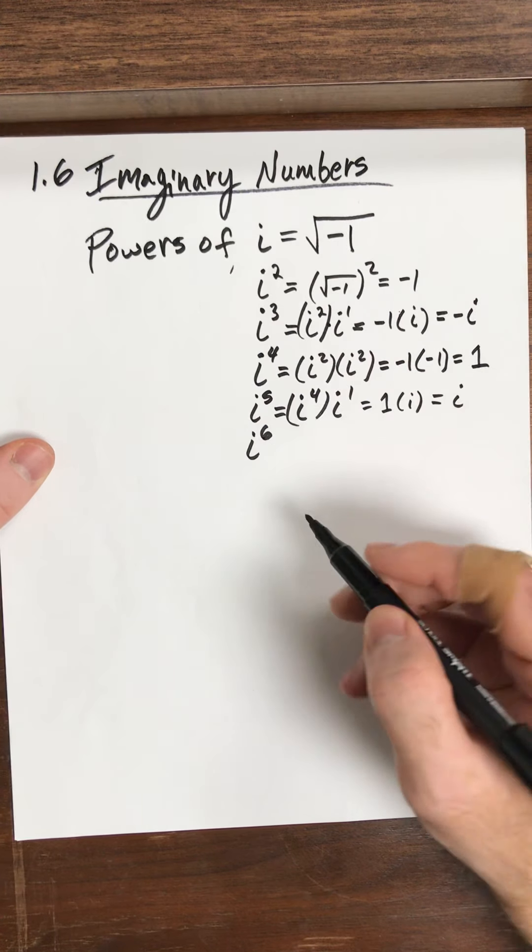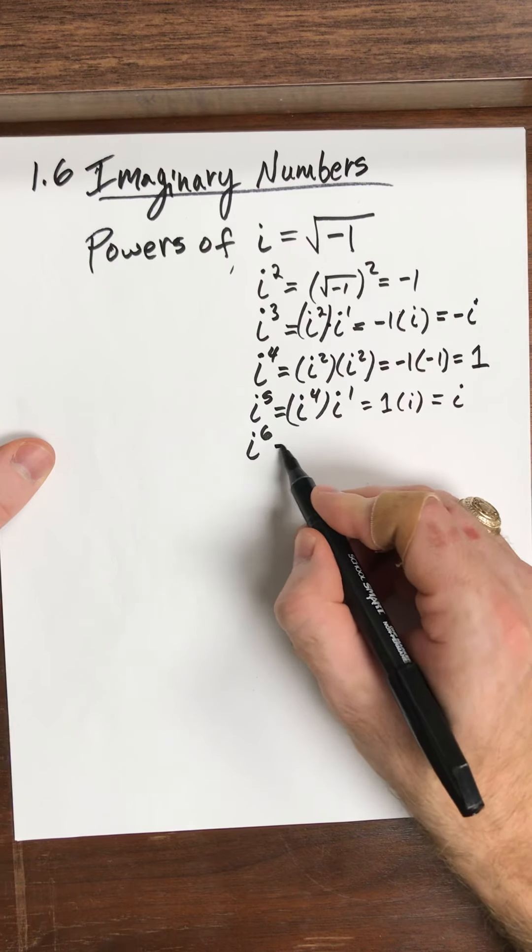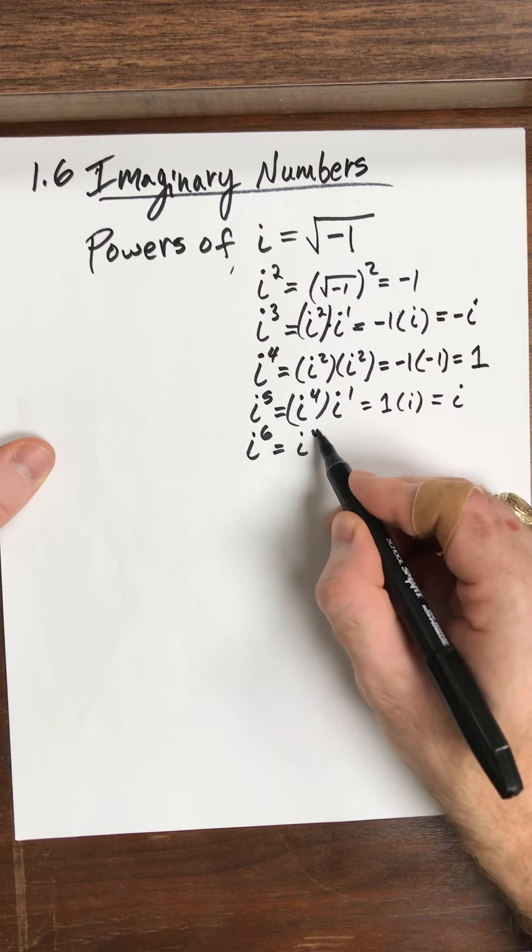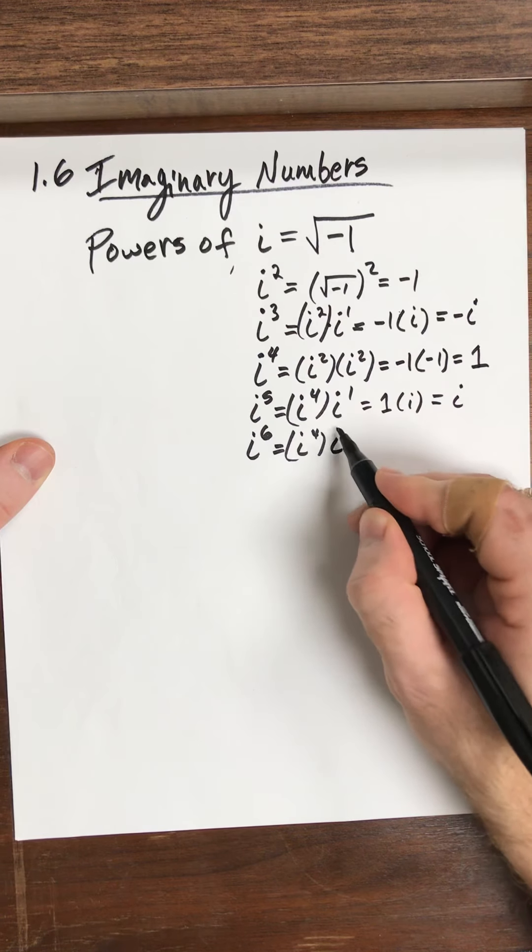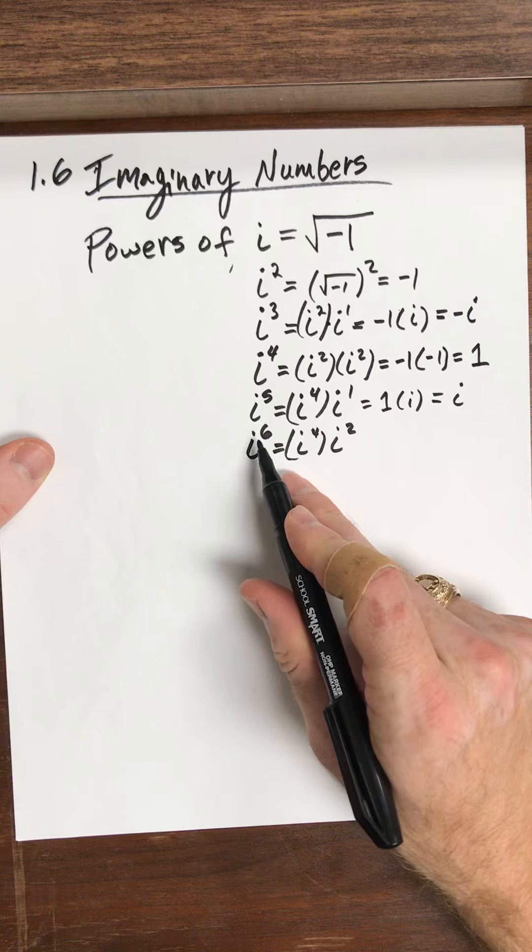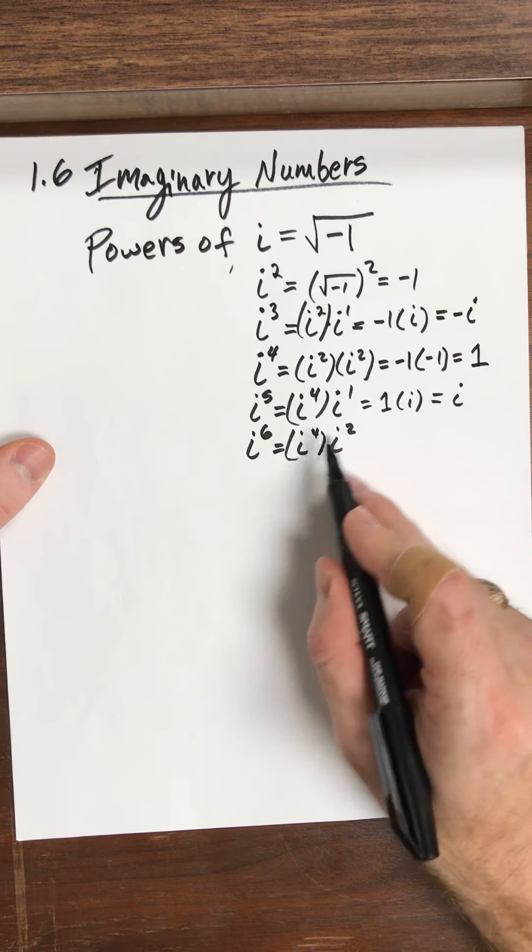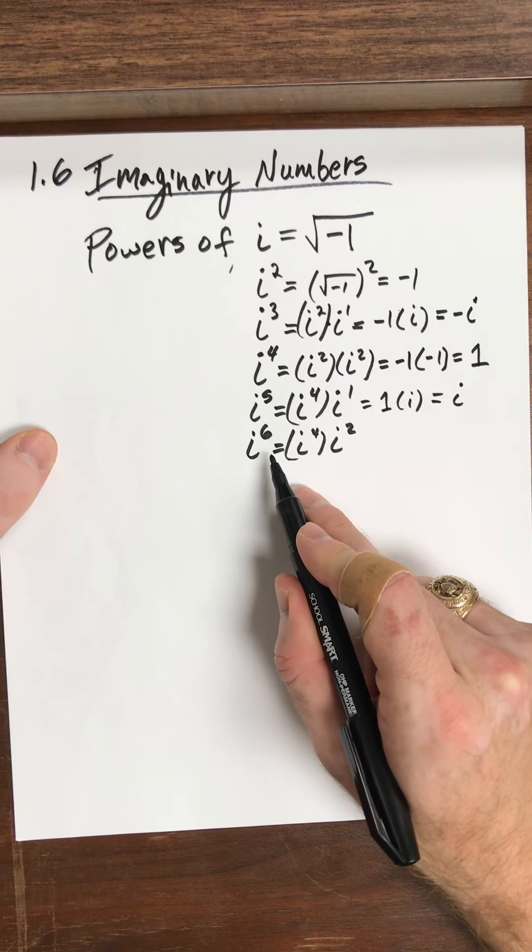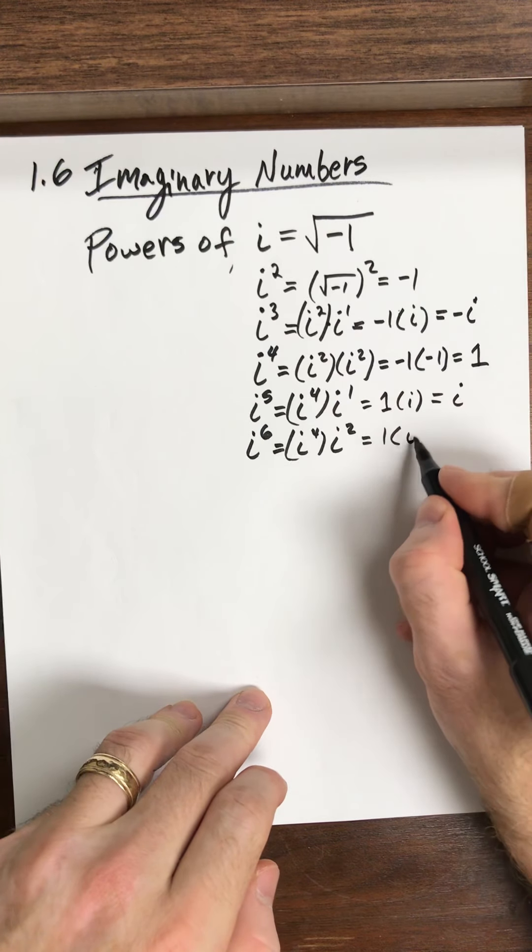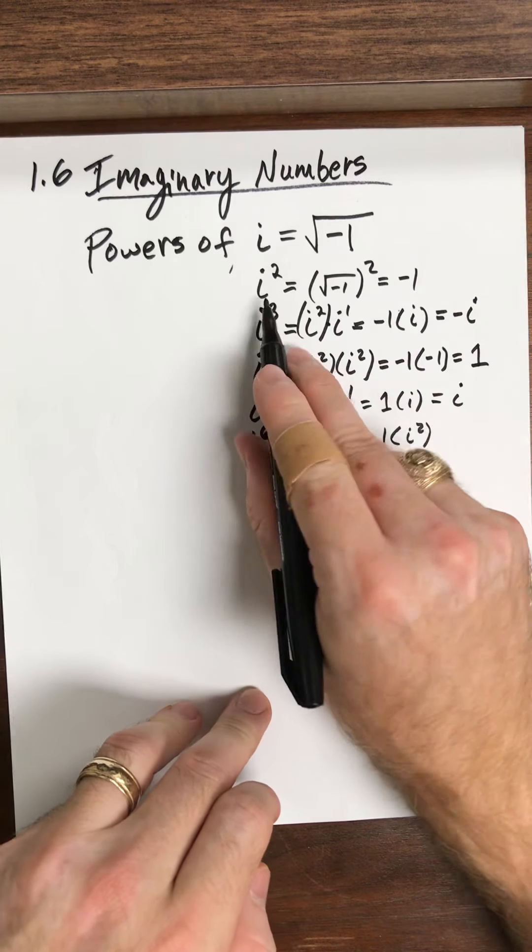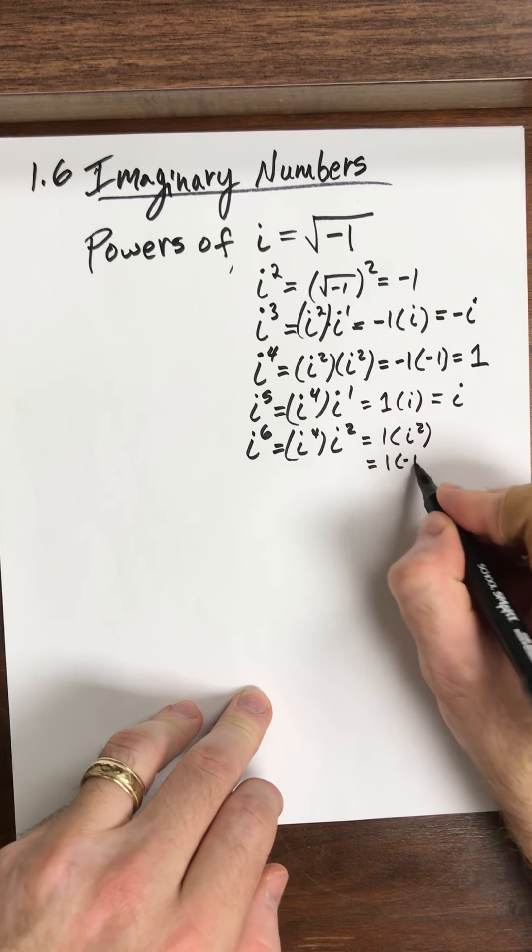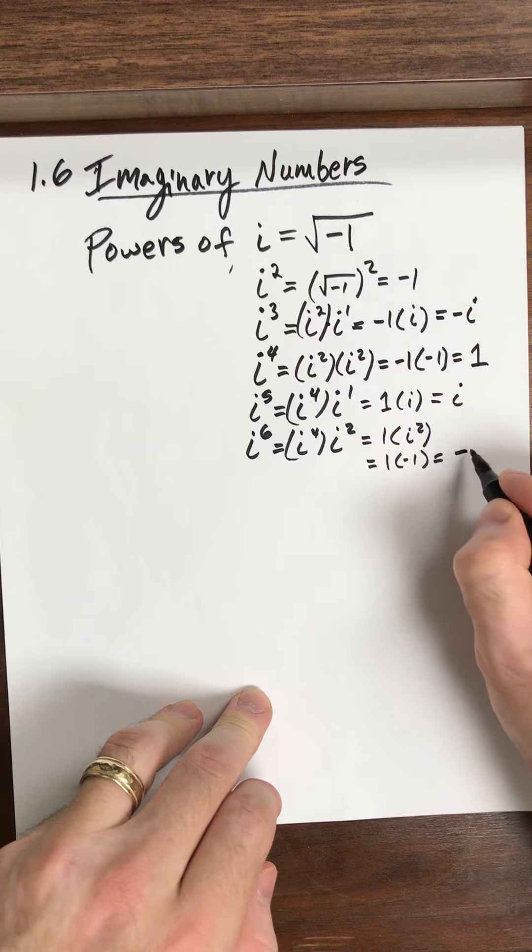Let's try i to the sixth. Let's do this real quick. So this is i to the fourth times i squared. So i to the fourth and i squared, that adds up to six of those i's. And so i to the fourth, once again, is 1. And then i squared, well, i squared is what? i squared is negative 1. So that's 1 times negative 1, which is negative 1.